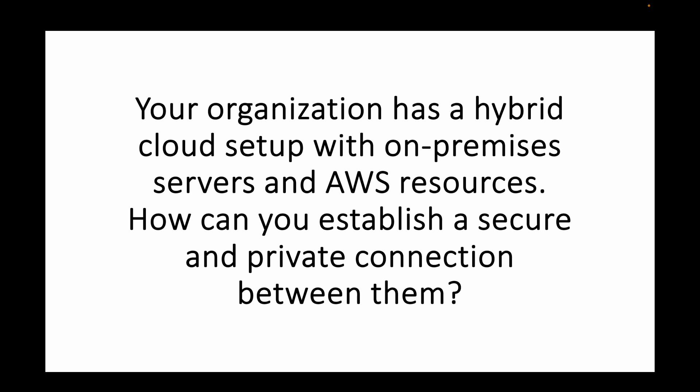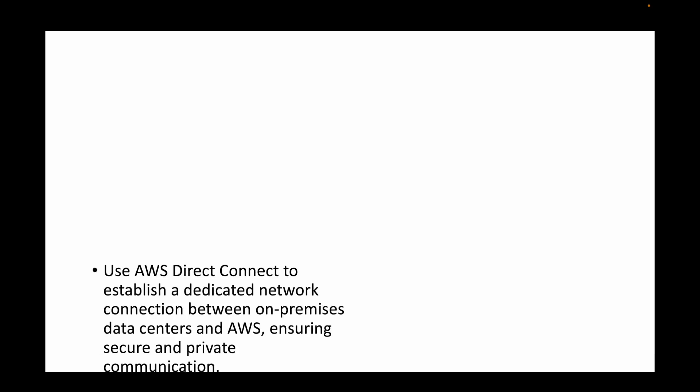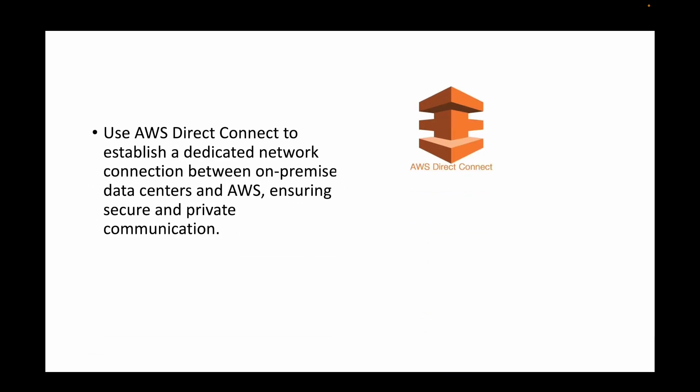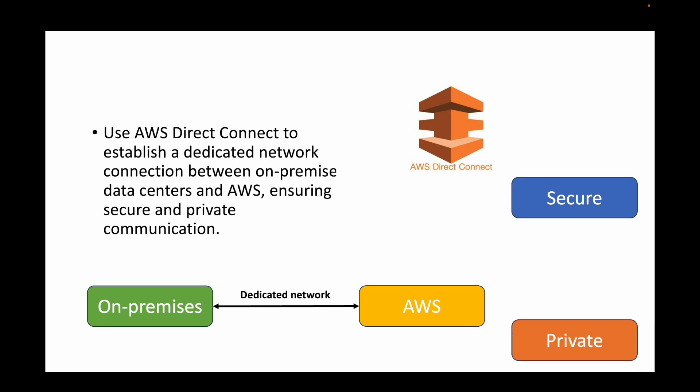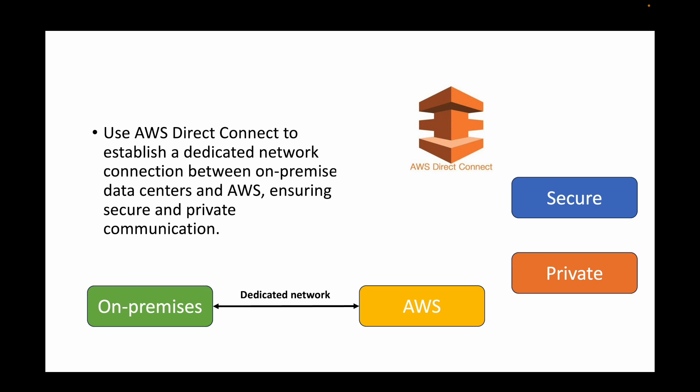The first question is: your organization has a hybrid cloud setup with on-premise servers and AWS resources. How can you establish a secure and private connection between them? For this, we have the service called AWS Direct Connect, which we can use to establish a dedicated network between your on-premise data center and the resources in AWS. This ensures secure and private communication between the two data centers.